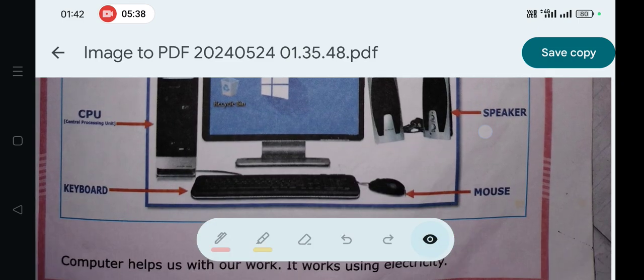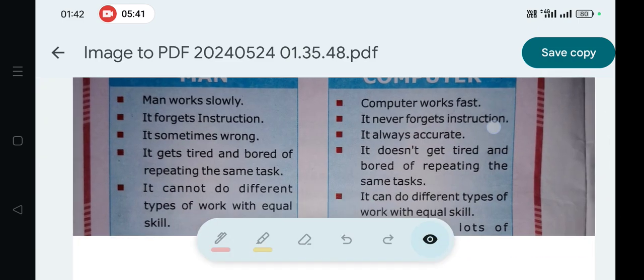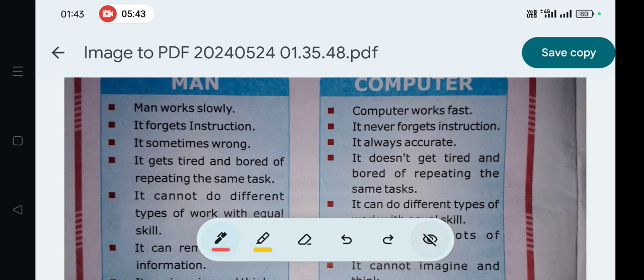Fourth point: computer works fast. Next, number 5: it never forgets instructions. Number 6: computer is always accurate.